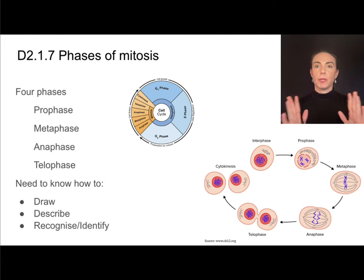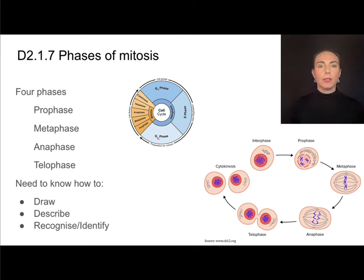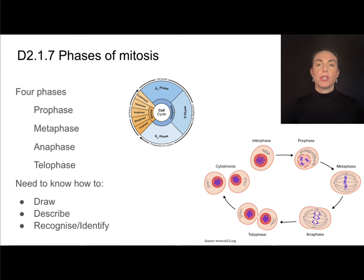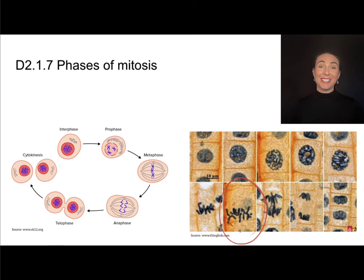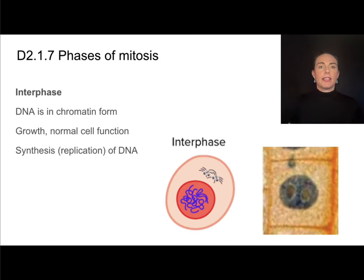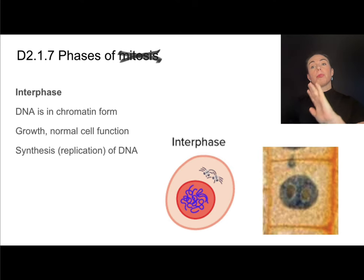Mitosis is strictly the division of the nuclear material. The cell has already replicated its genetic material, and then it goes through mitosis, which has four distinct stages followed by cytokinesis — the division of the cytoplasm. For each phase, you need to know how to draw it, how to describe it, and how to recognize it — both in cartoon diagrams and in micrographs of real cells. We'll start with a part of a cell's life that's actually not part of mitosis: interphase. Mitosis is strictly prophase, metaphase, anaphase, and telophase. Interphase would happen prior to that.